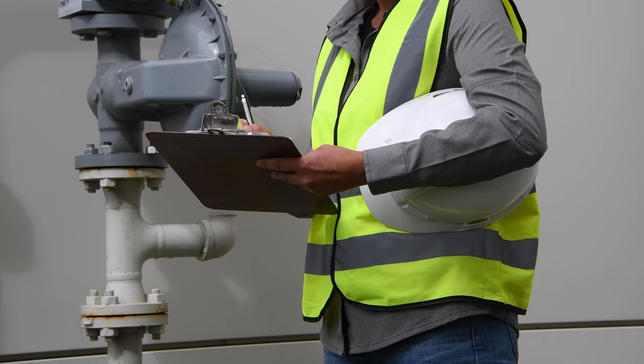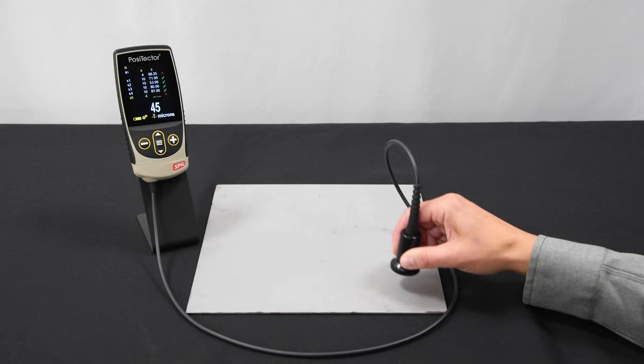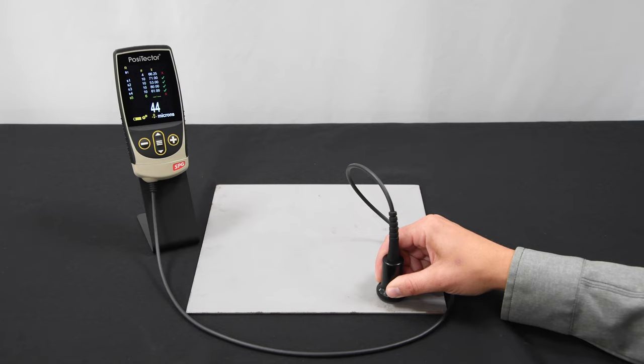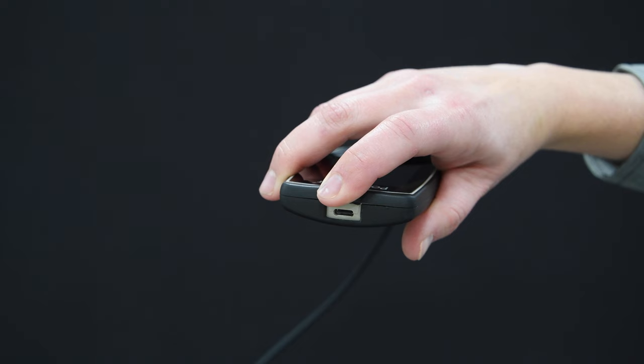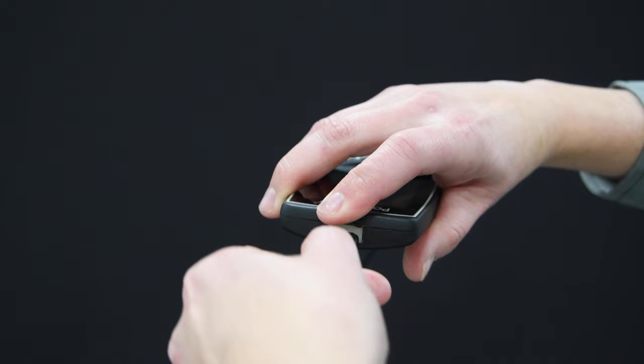On competitive instruments, this method is challenging to follow and requires writing down many readings. PosiTector SPG advanced models feature smart batch, making this process easy by automatically keeping only the highest reading in each spot and averaging several spots together right on the gauge.